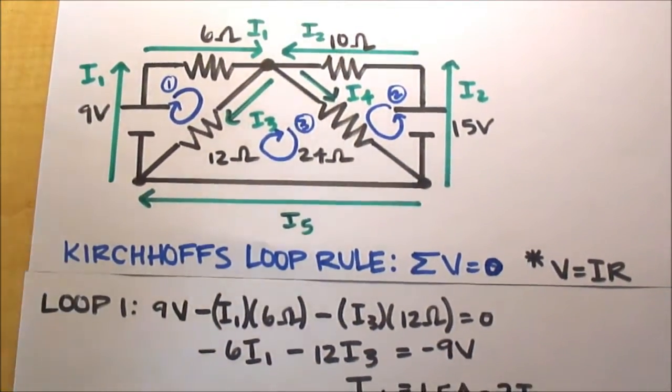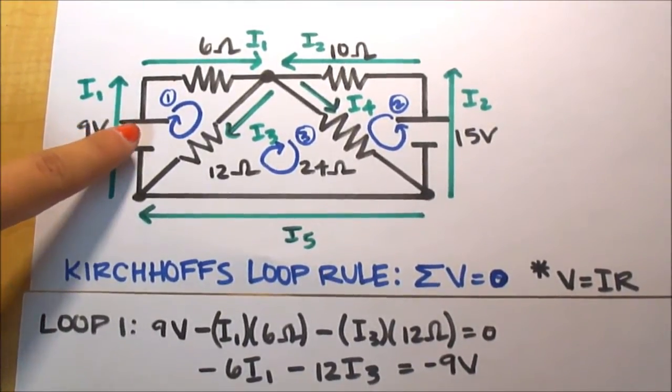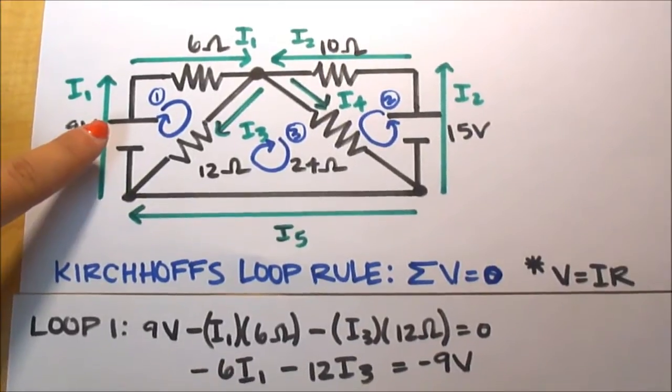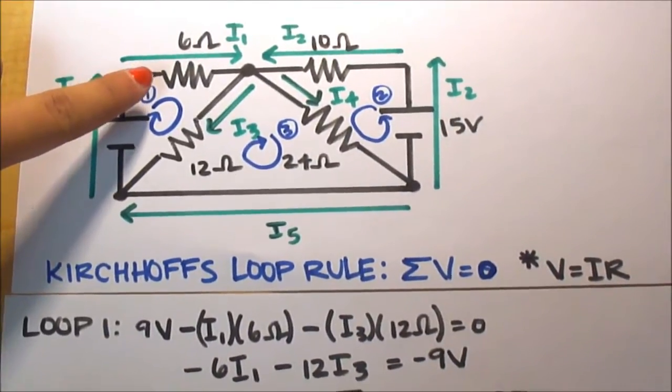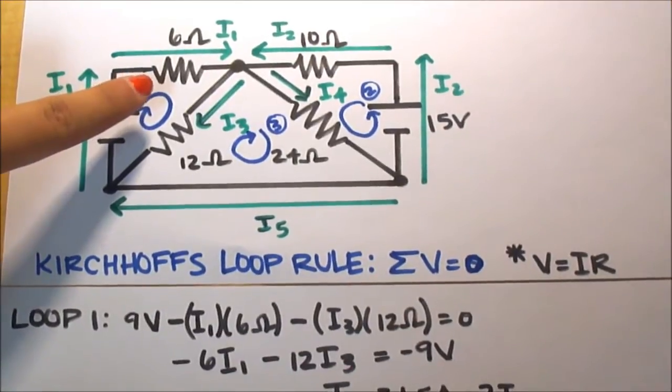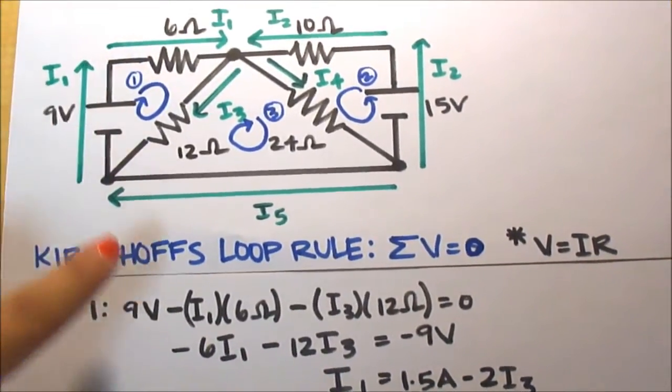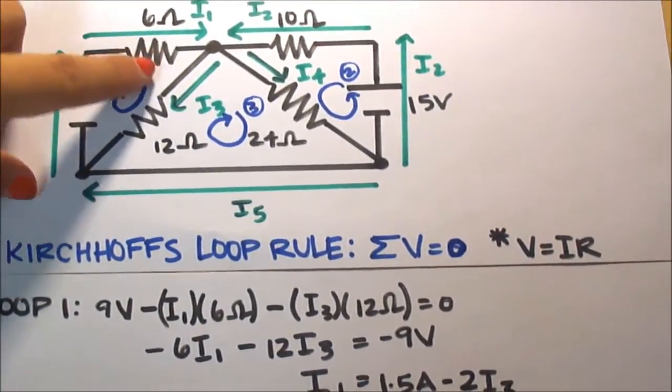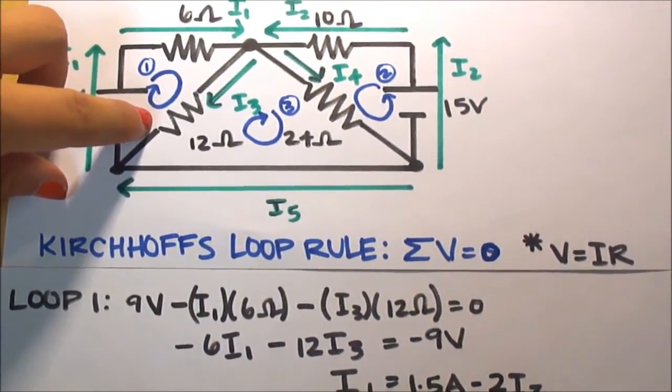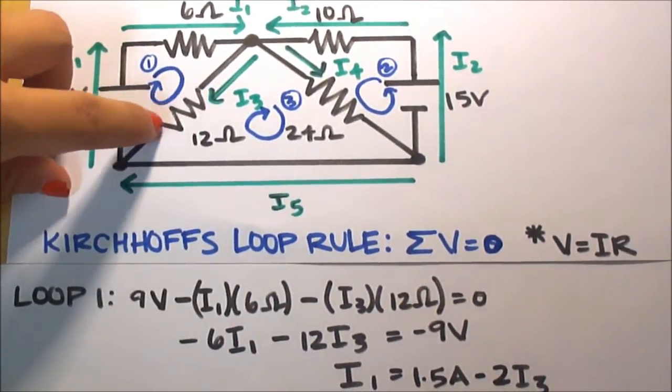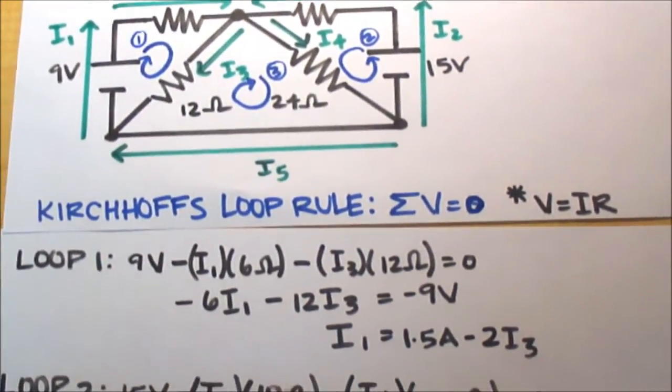In the case of loop 1, we're going to start over here with 9 volts. Since we're going from the negative end of the battery to the positive end in our loop, it's going to be a positive number, positive 9 volts as you can see here. Then we're going to go up here to our 6 ohm resistor. Since we're going with the direction of the current, it will be a negative number. So we'll use V equals I times R, so we'll have I1 times 6 ohms, and that's all going to be negative. Then we're going to come down here, again within our loop, and we're again flowing with the direction of the current, so our number will be negative. So we'll have negative I3 times 12 ohms. This will ultimately give us this equation, which simplified and solved for I1 will give us this equation.